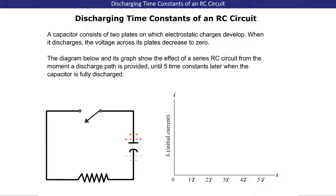The diagram below and its graph show the effect of a series RC circuit from the moment a discharge path is provided until five time constants later when the capacitor is fully discharged.